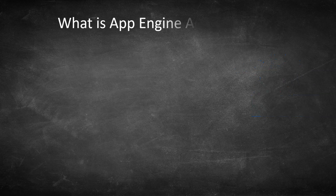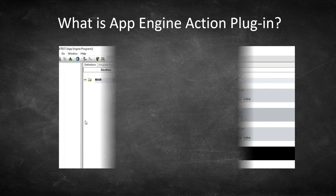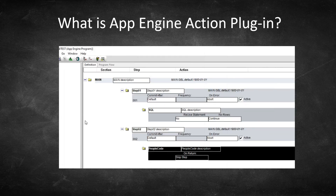Let's see what exactly is App Engine Action Plugin. Suppose we have a delivered App Engine and you want to make changes to the existing SQL or PeopleCode action of that App Engine. That's when App Engine Action Plugin comes into play — to inject our custom changes through configuration instead of touching delivered actions.